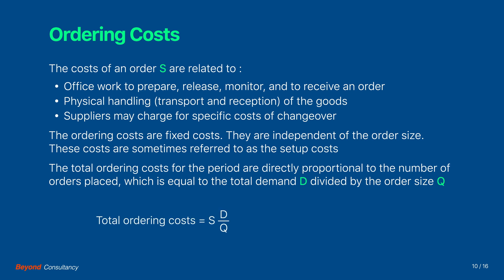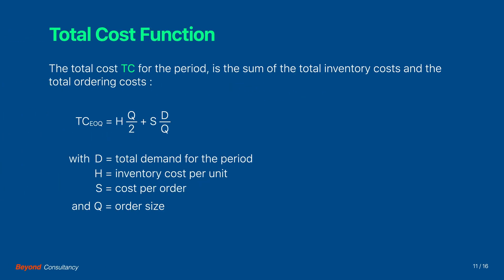The total ordering costs for the period are directly proportional to the number of orders placed, which is equal to the total demand D divided by the order size Q. So we come to this formula for the total ordering costs for the period. We now put the previous cost terms together and come to the total cost formula. Note that we have added the EOQ subscript to differentiate this formula from other order optimization formulas, which we'll discuss in later keynotes.